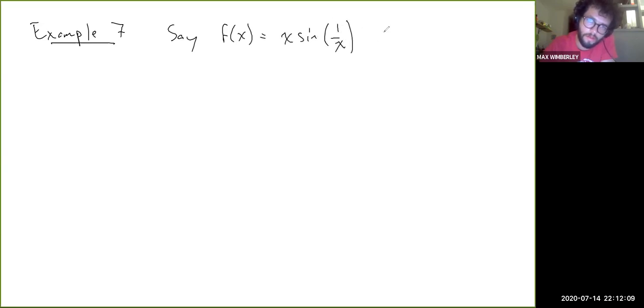But consider this next example. And this is the example they give in the book. So example 7: say f of x is x sine of 1 over x for x in the open-closed interval (0, 1/π]. I'm going to make a little cut here while I draw the graph of this function.